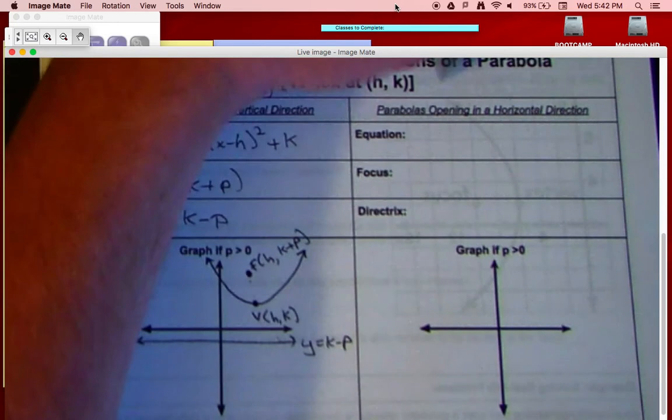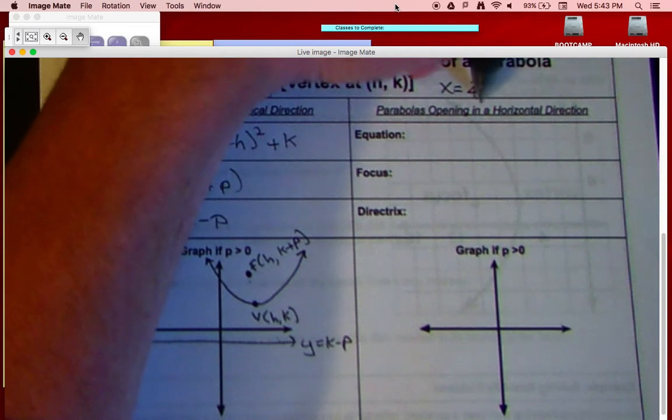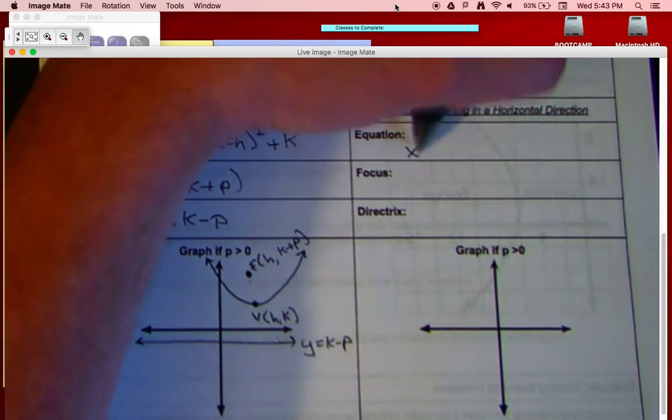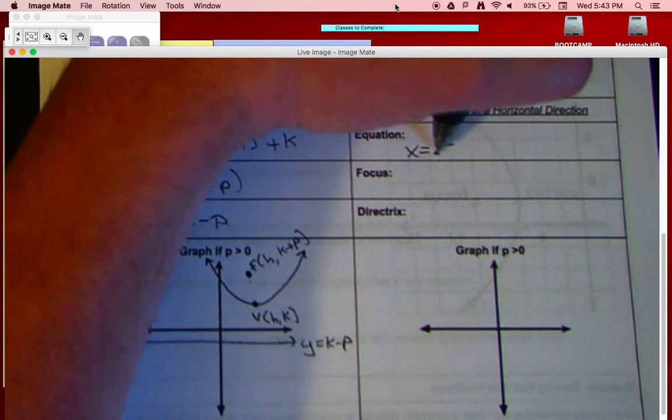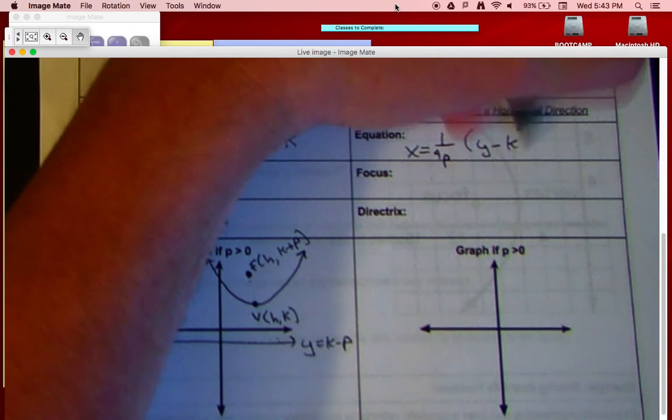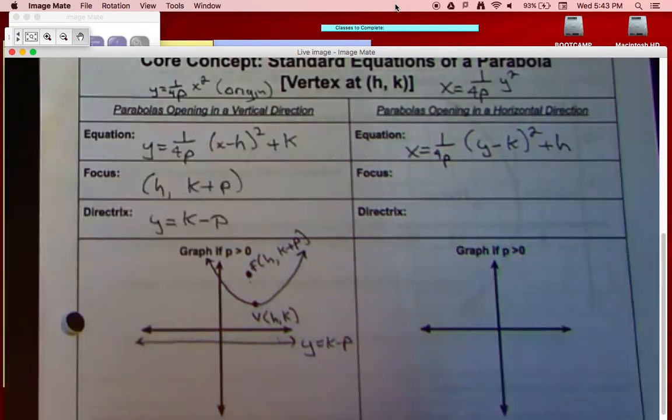So horizontal, if you remember, if it was at the origin, it was x equals 1 over 4p y squared. So it's going to have a similar format. So let's go x equals, it's going to be 1 over 4p once again. Here, though, we're going to have y minus k, the quantity squared, plus h.